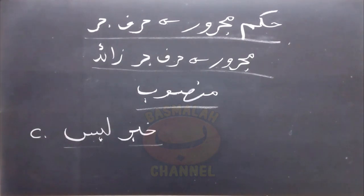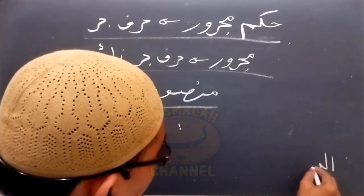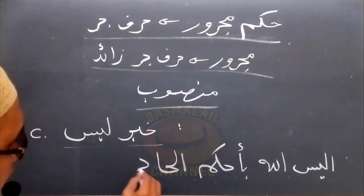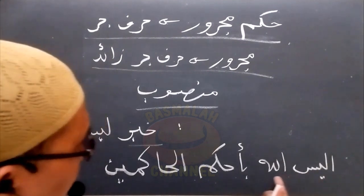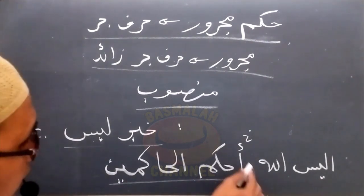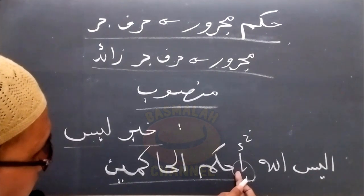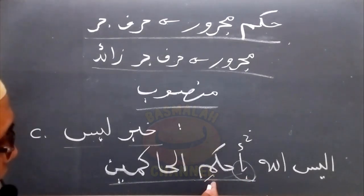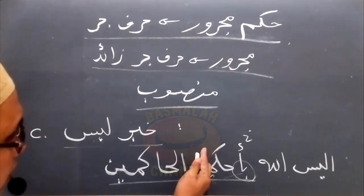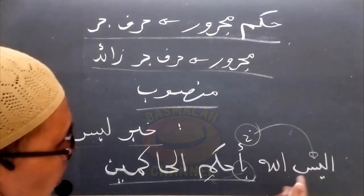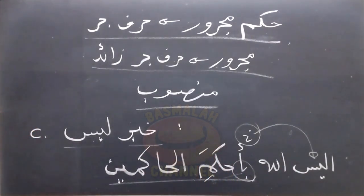Kemudian yang selanjutnya manakala dia berada sebagai khabar bagi lafad Laysa, dimana khabar bagi lafad Laysa itu pun dalam mahal nasab. Contohnya seperti lafad 'alaisa Allahu bi ahkamil hakimin' — bukankah Allah ialah yang Maha Bijaksana di antara orang-orang yang bijaksana. 'Bi' di sini adalah huruf Jer tambahan yang boleh dibuang. Majrurnya adalah lafad 'ahkami' yang secara lafat dijerkan namun secara mahal dinasabkan sebagai khabar bagi lafad Laysa. Kalau huruf Jer dibuang maka akan dibaca 'alaisa Allahu ahkamal hakimin'.